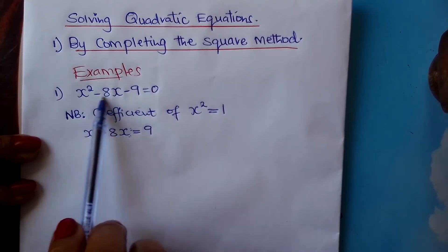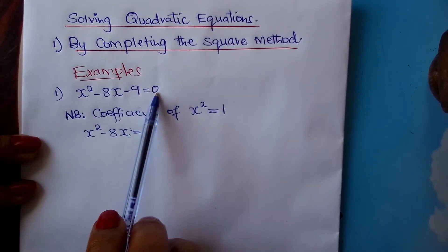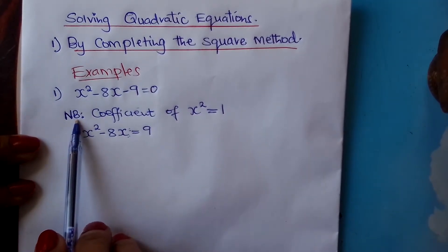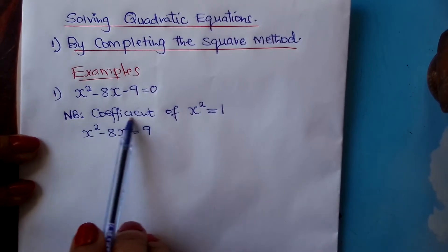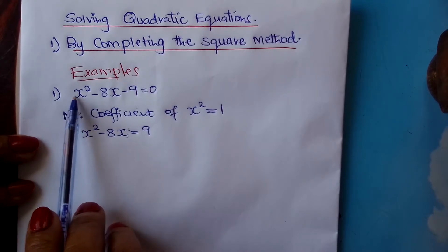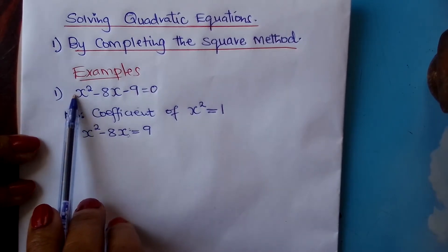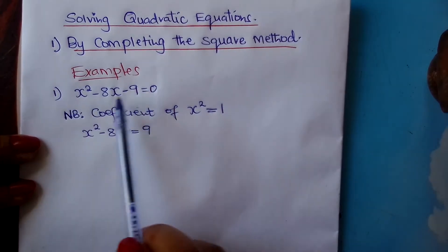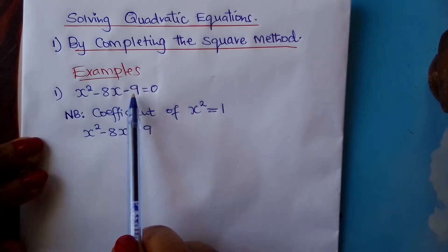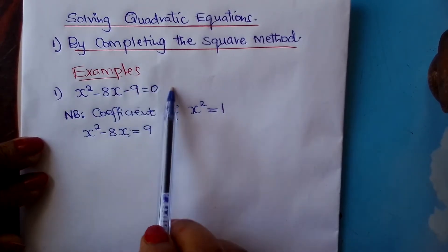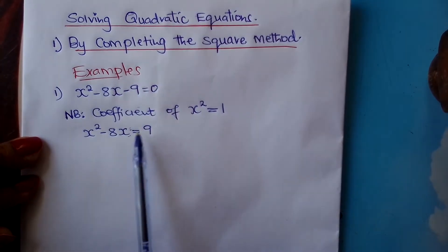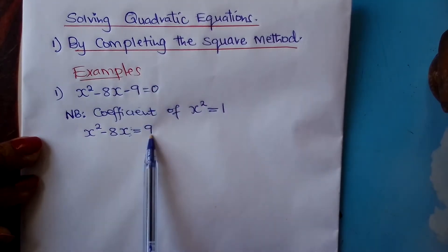Suppose you are told to solve a quadratic equation using the completing the square method. The first thing, as written here, is that you must ensure that the coefficient of x squared is 1. You must come to the equation and ensure that the coefficient of x squared is 1. Then the next step, after making sure the coefficient of x squared is 1, is you take this constant to the other side — the c here to the other side. I've taken this to the other side; it becomes 9.